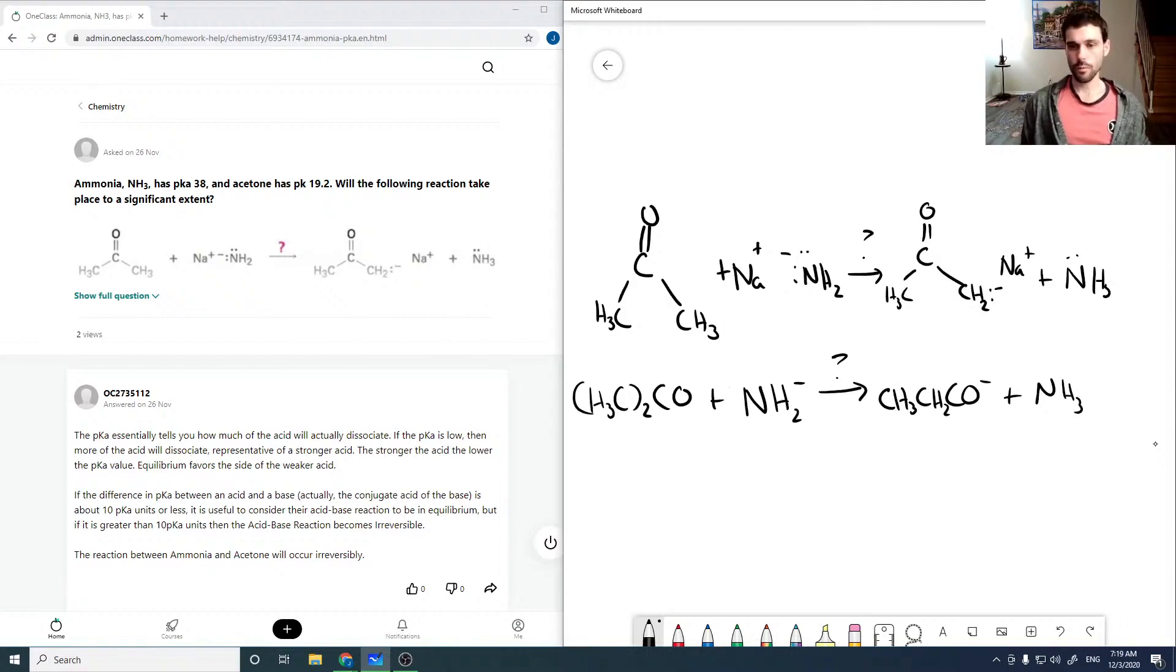If we look at this, so acetone - it says acetone has a pKa of 19.2. Just writing out what this is saying to us: H2O plus NH3 goes to ammonia and acetone.